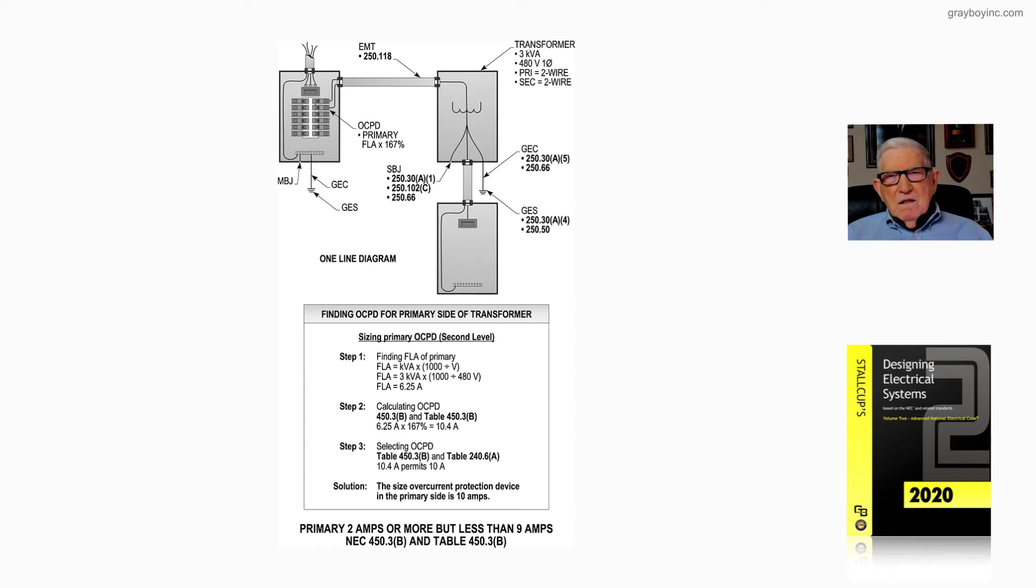The grounding electrode conductor is sized again from 250.30A5, 250.86, as well as table 250.66 if you should connect it to the structural steel. And then of course you select the grounding electrode from 250.30A4 and 250.50 of the code if there's more than one electrode.